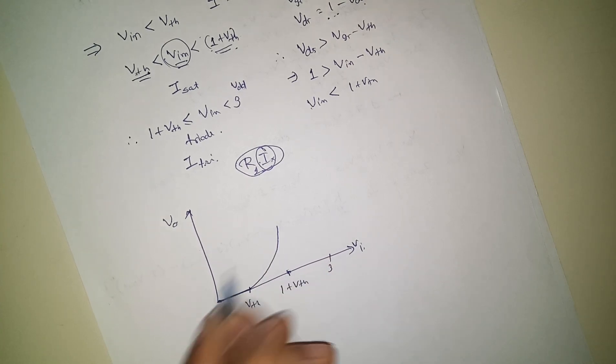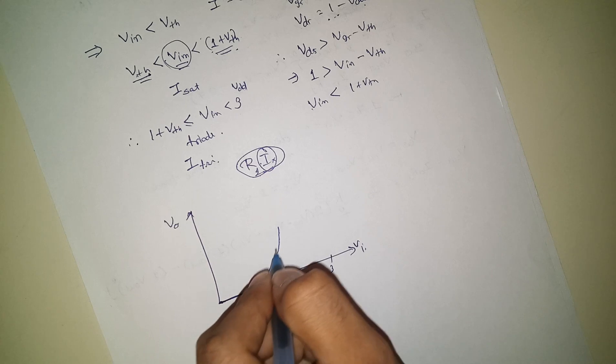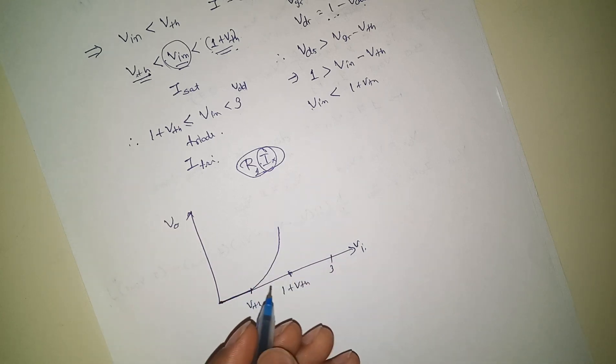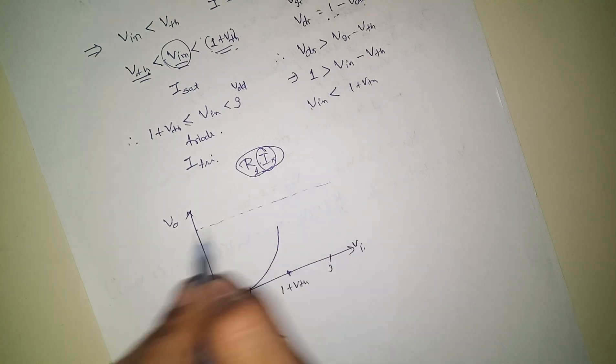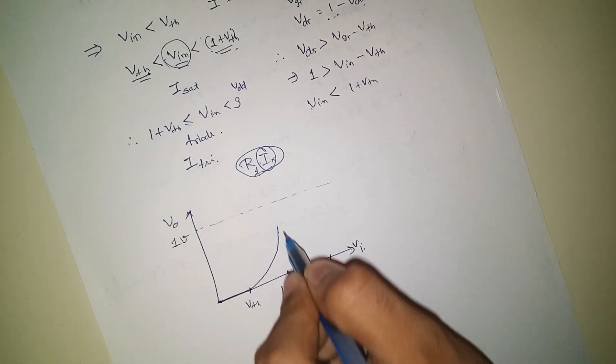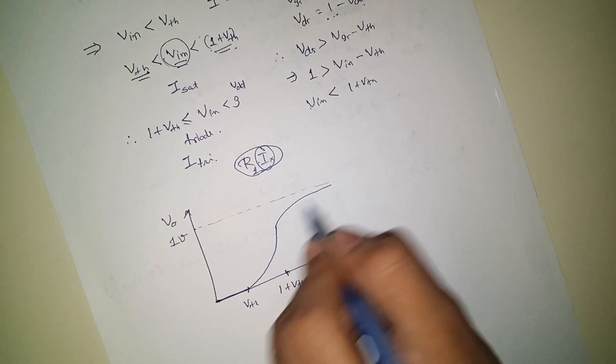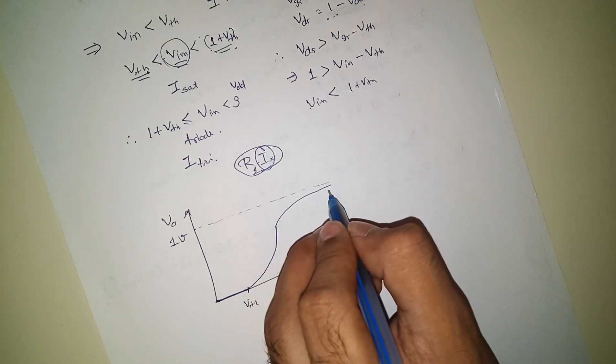From this to this point, current is increasing like this. R is constant, so the nature of the graph will be the same. And after that, let's say this is 1 volt. Now in triode, the equation will cover like this.